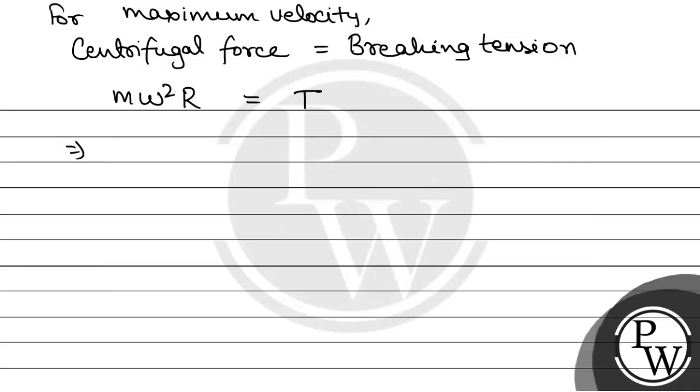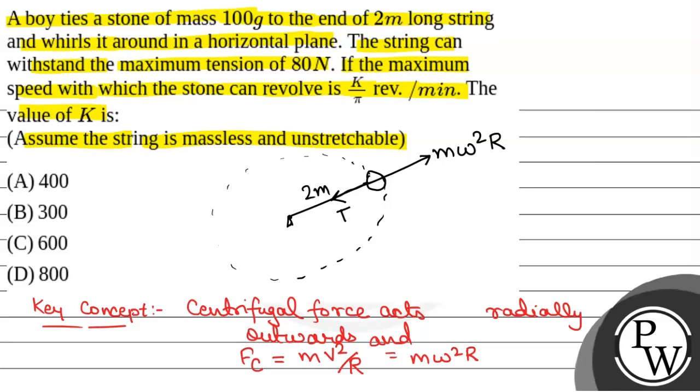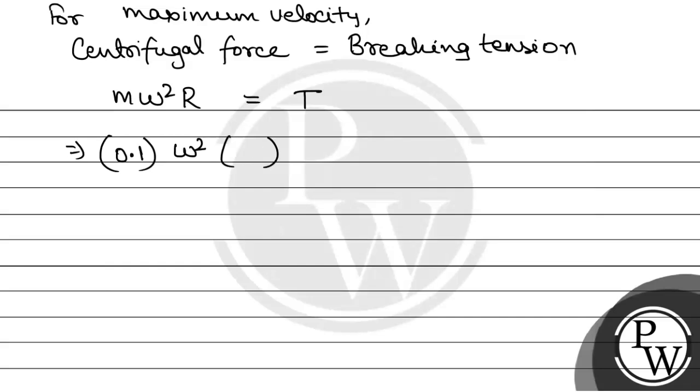And centrifugal force is m omega squared r. Now, mass is given 100 grams, so that is 0.1 kg omega squared. We have to find omega. R is, sorry, length of the string is 2 meter, so r will be 2 meter. And breaking tension is 80 N.